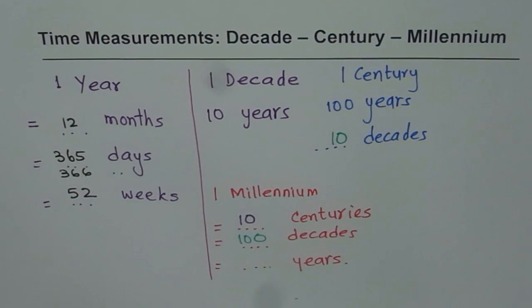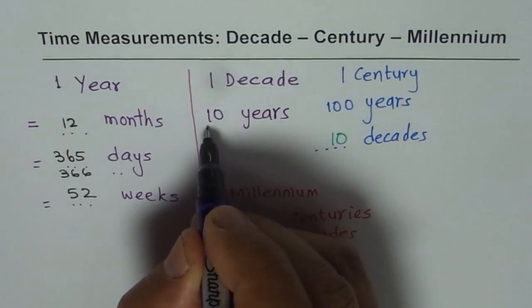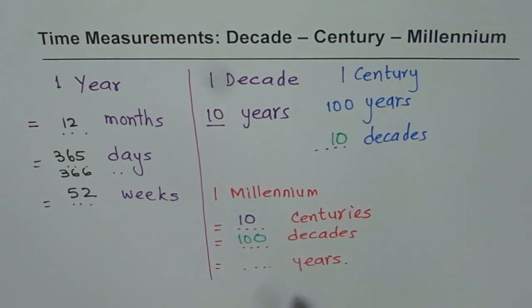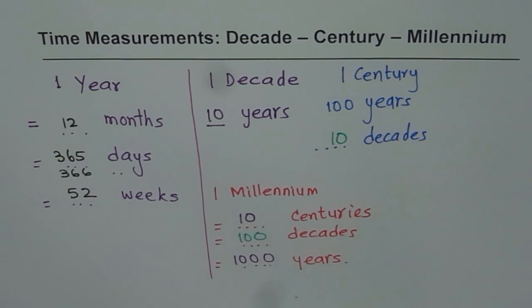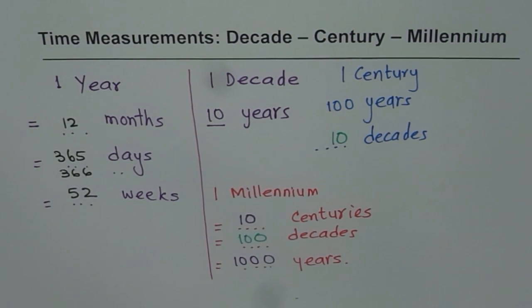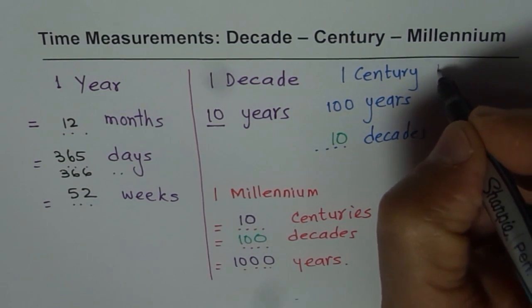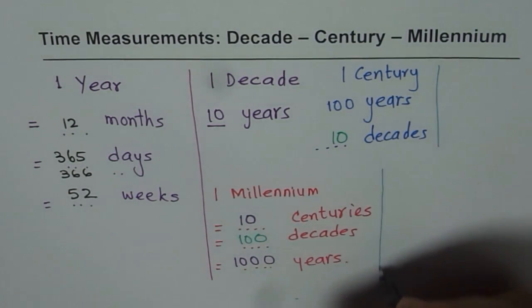And we also learn that one decade is 10 years. So 100 decades is how many years? One more 10. So it is 1000 years. So I think all these conversion factors gives you a good idea about measurement of time in years, decades, centuries and millennium. Now, as an exercise, what you can do is, you can find how these things are related.